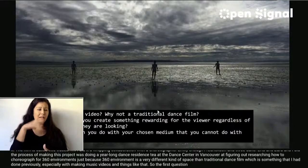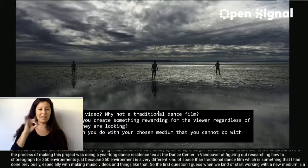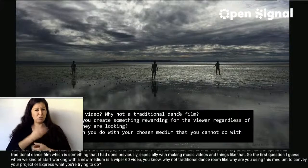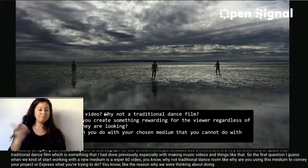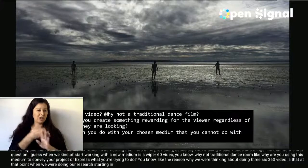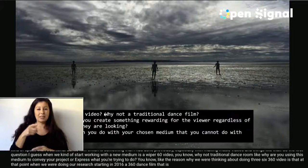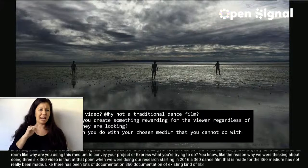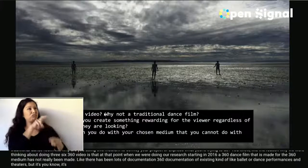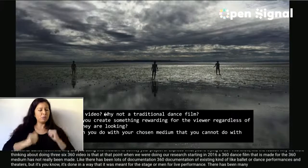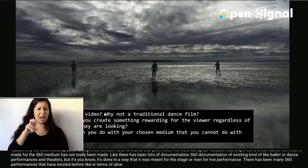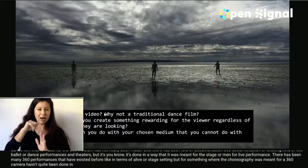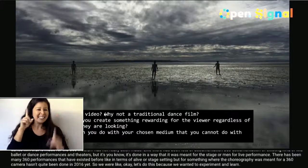The first question when working with a new medium is: why 360 video, and not traditional dance film? Why use this medium to convey what you're trying to express? In 2016, a 360 dance film made specifically for the 360 medium had not really been made. There was lots of 360 documentation of existing ballet or dance performances in theaters, but nothing where the choreography was meant specifically for a 360 camera. So we wanted to experiment and learn what we could about the medium itself.